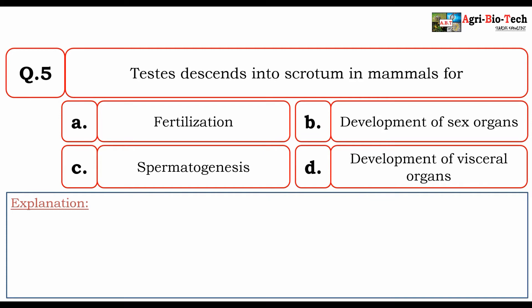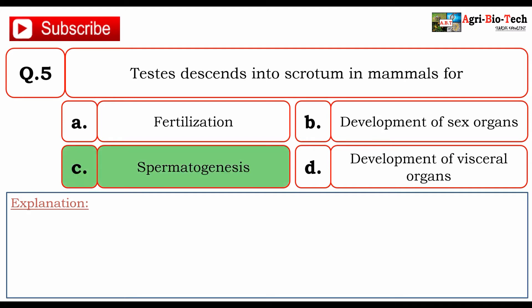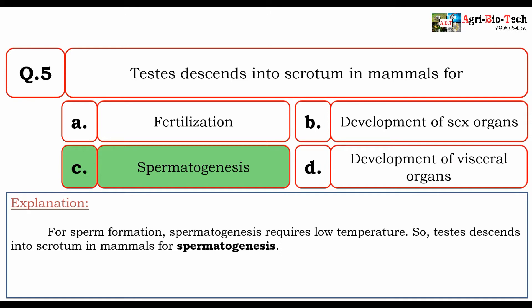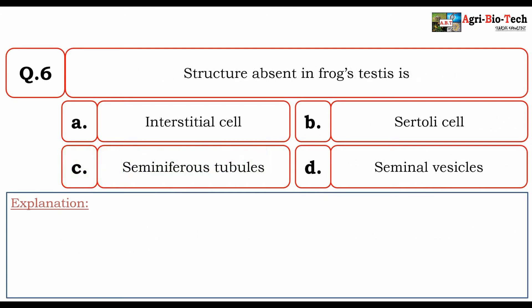Next question: testes descend into the scrotum in mammals for — fertilization, development of sex organs, spermatogenesis, or development of visceral organs? The correct answer is C: spermatogenesis. For sperm formation, spermatogenesis requires a low temperature, so testes descend into the scrotum in mammals for spermatogenesis.